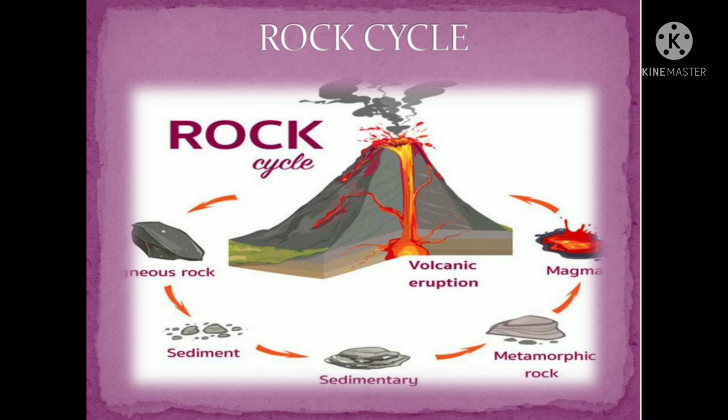Metamorphic rocks, due to heat and pressure, change into magma. Due to high pressure and heat, magma is made. Magma is then released by the volcano as lava, and from that lava, igneous rocks are formed again. So the cycle never ends.